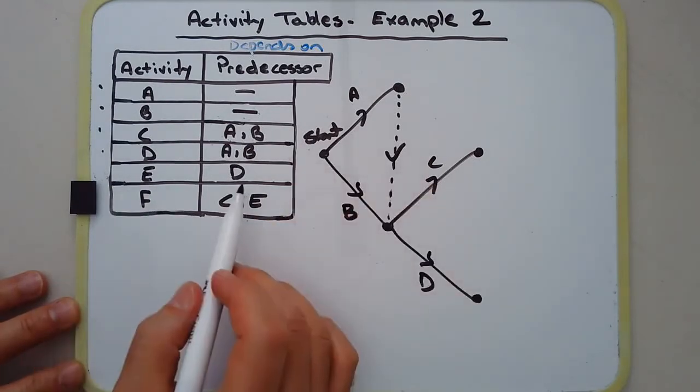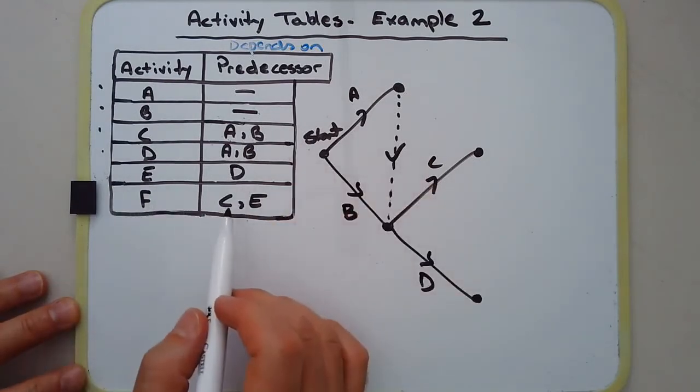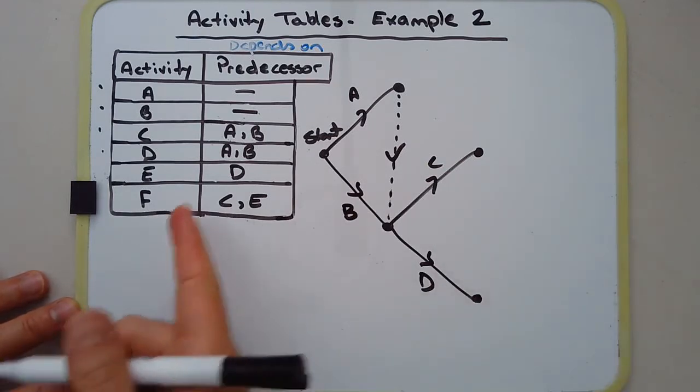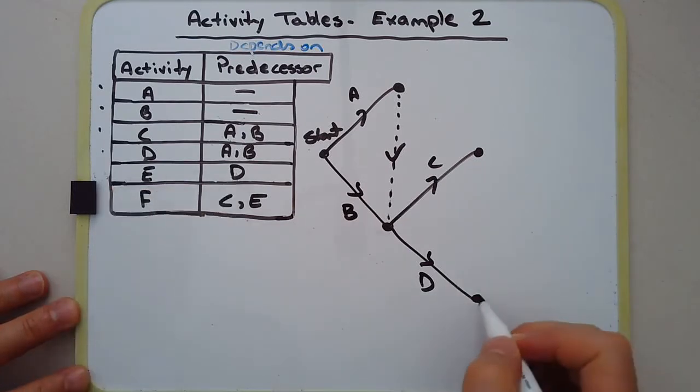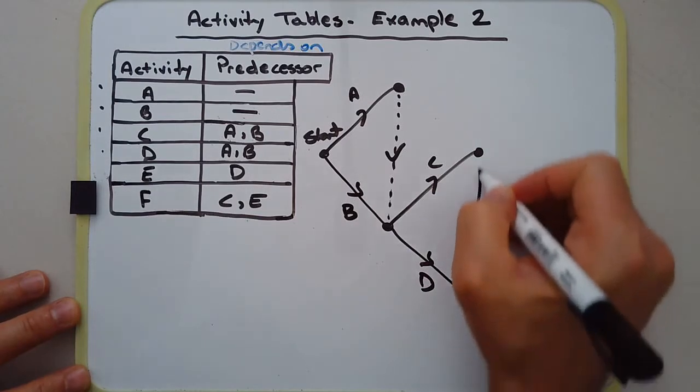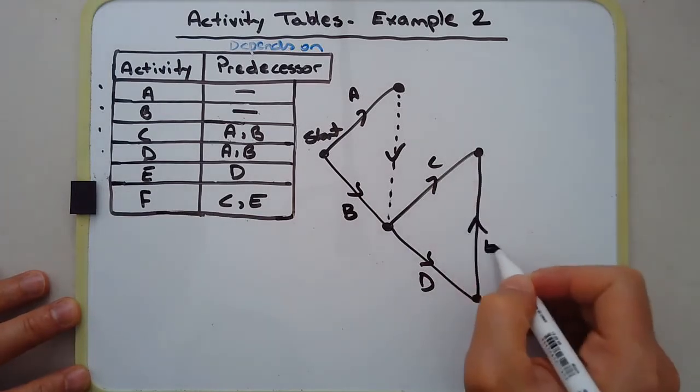Now E depends on D but F depends on C and E. Okay, so what I'm going to do is I'm going to draw activity E joining onto activity C. Okay, this way. So this is activity E.